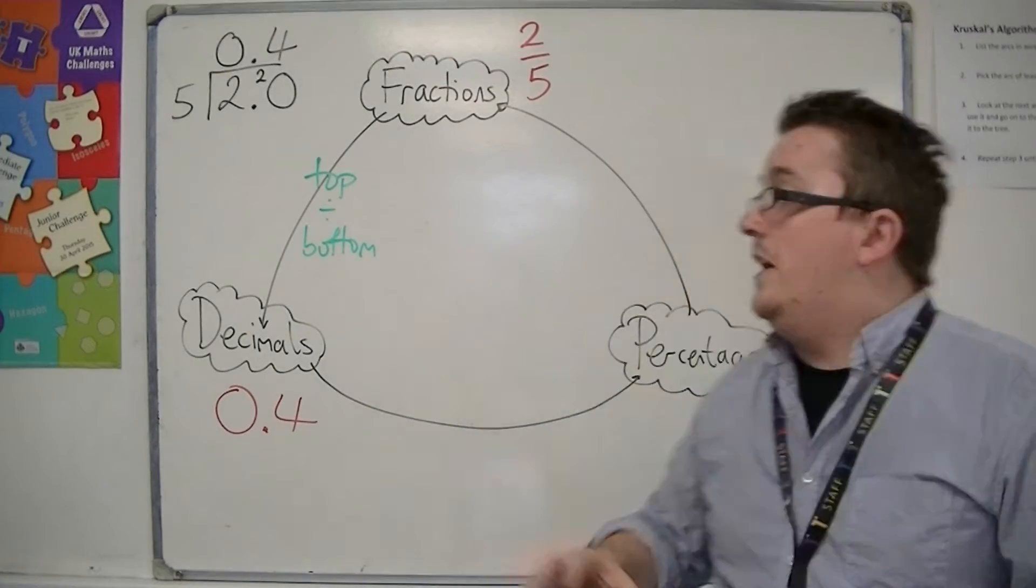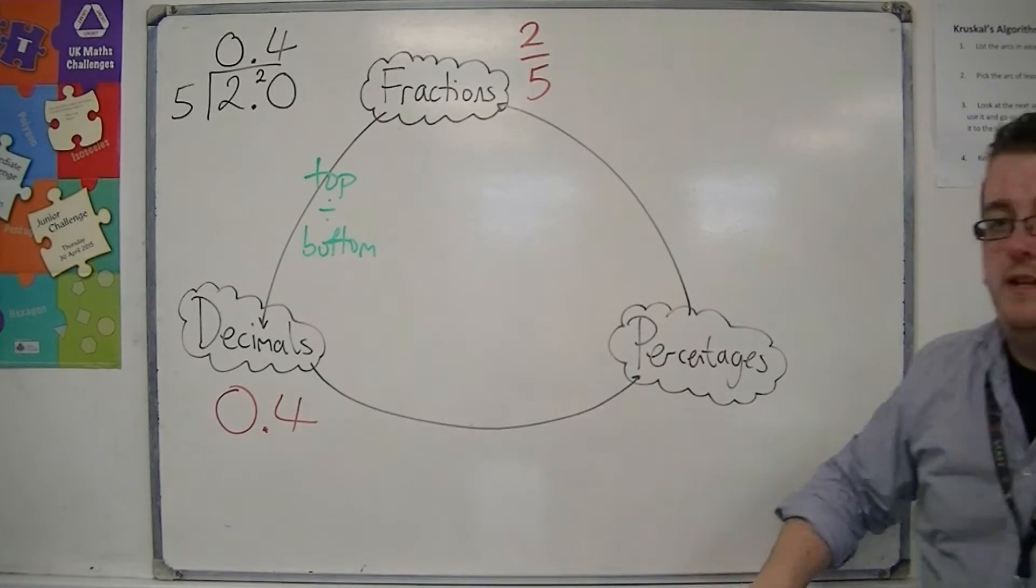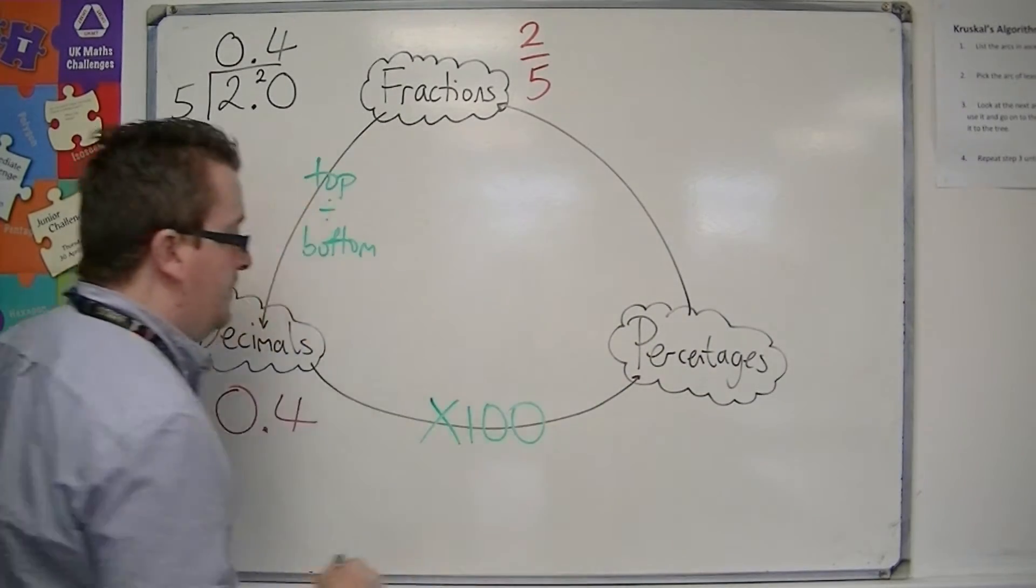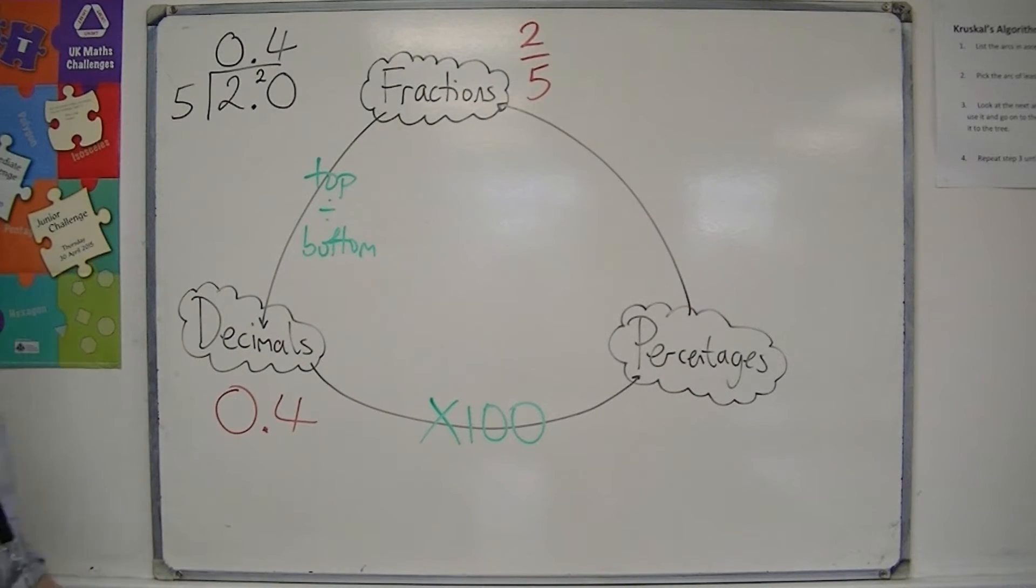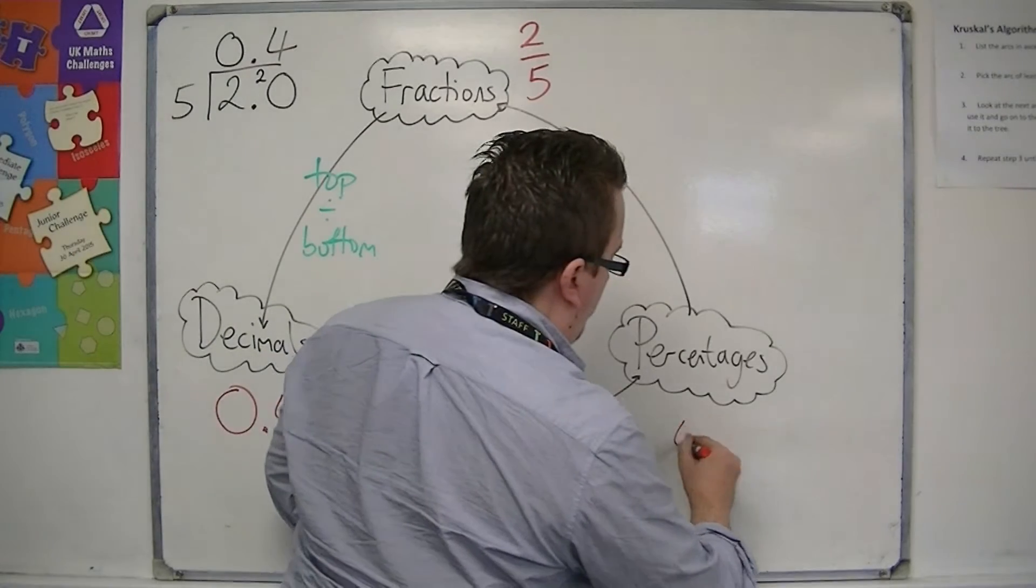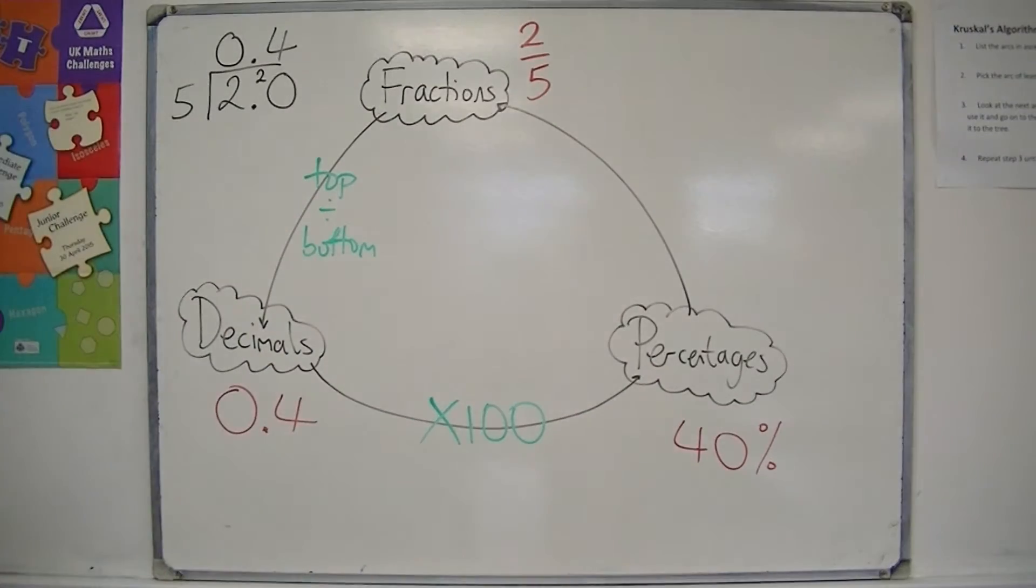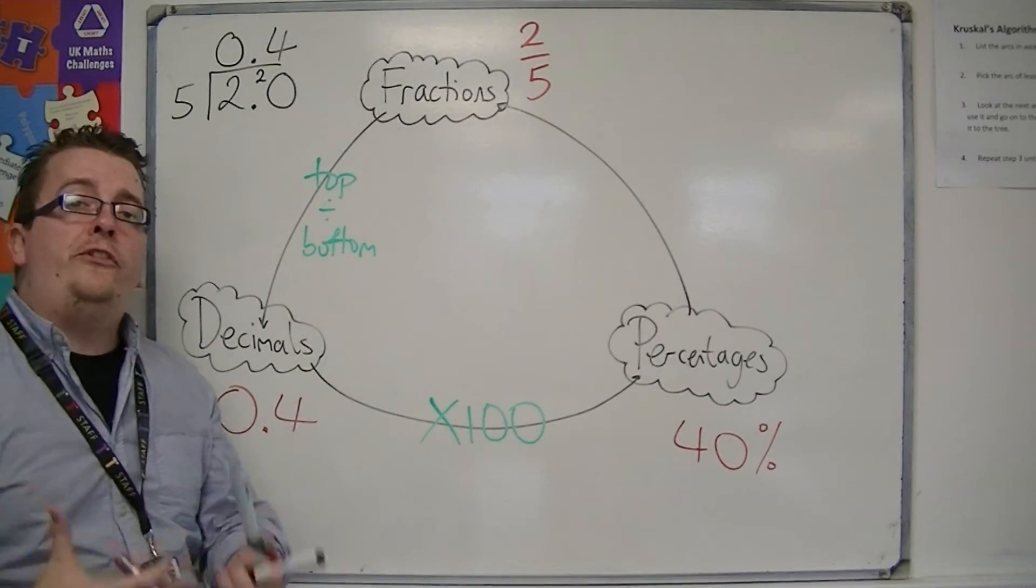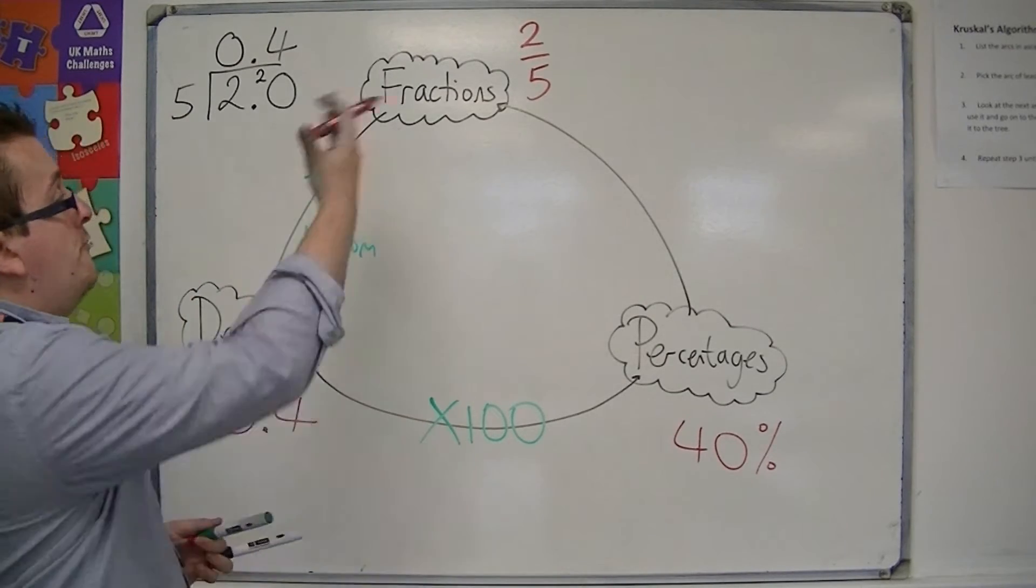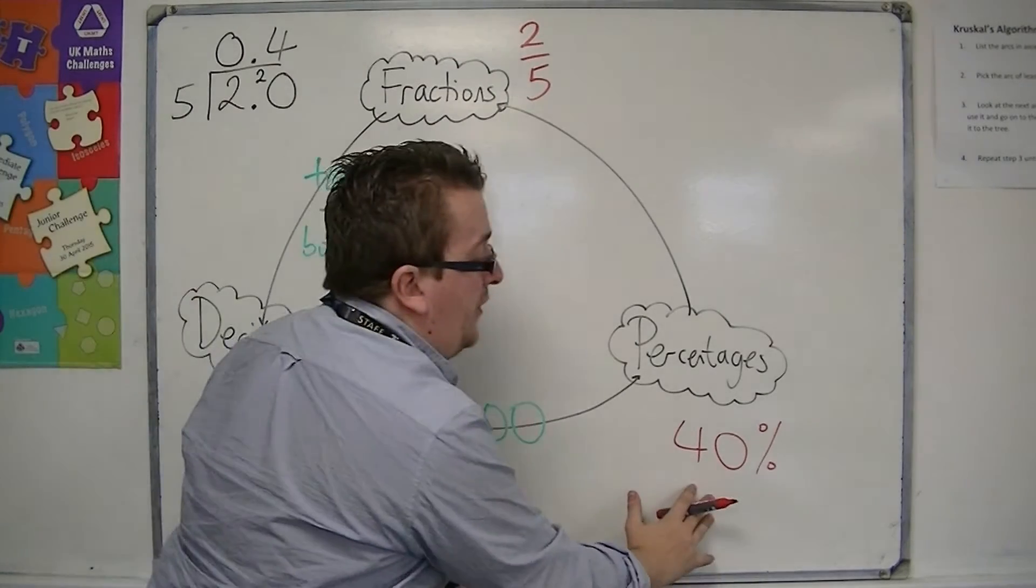So we've now converted from a fraction to a decimal. We now want to get from the decimal to the percentage. And the process to do that is by multiplying by 100. So if you multiply 0.4 by 100, you get 40. So that's 40%. So equivalent ways of describing percentages are as fractions or decimals. 2 fifths is the same as 0.4, which is the same as 40%.